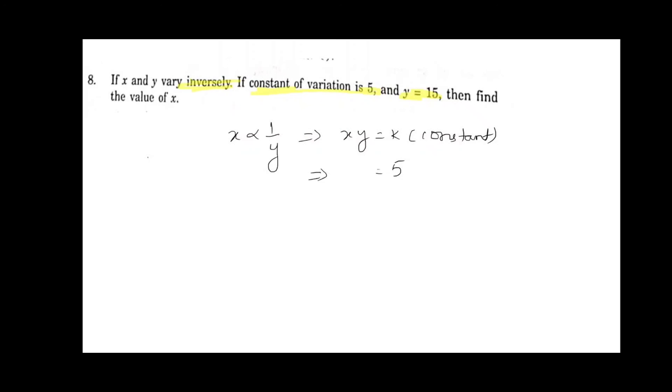So x into 15 equals 5. x equals 5 by 15, which cancelled gives 1 by 3. And x is 1 by 3 is the answer.